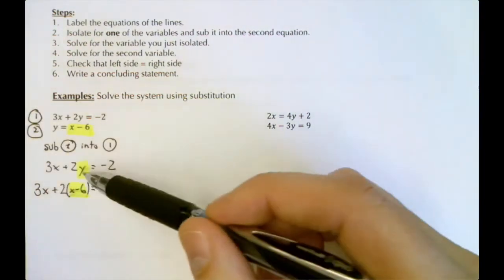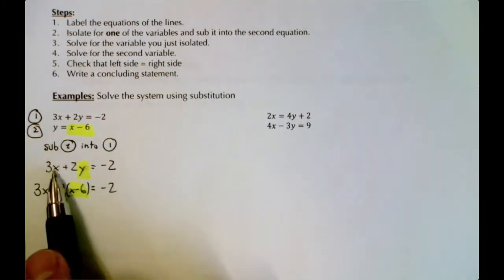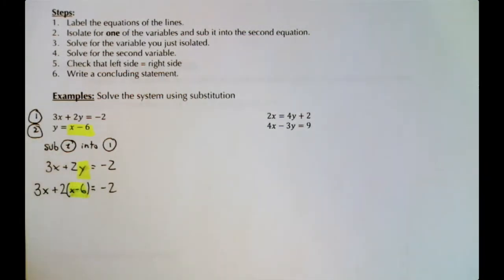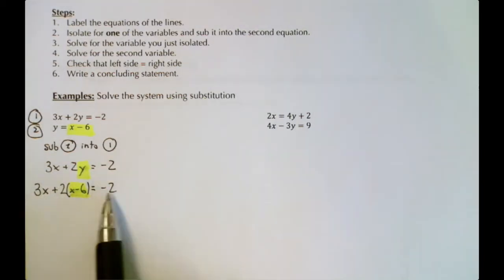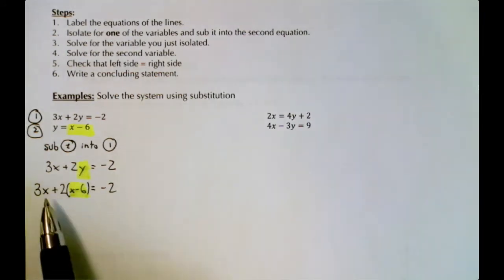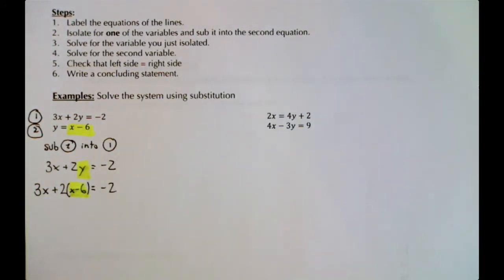We did substitution — we replaced y with x - 6. The reason we do this is because we can't solve an equation with two unknowns. But now that we've substituted, the equation only has the letter x, so we can solve for x. We expand, collect like terms, and isolate for x, just like solving equations from the review unit and grade 9.